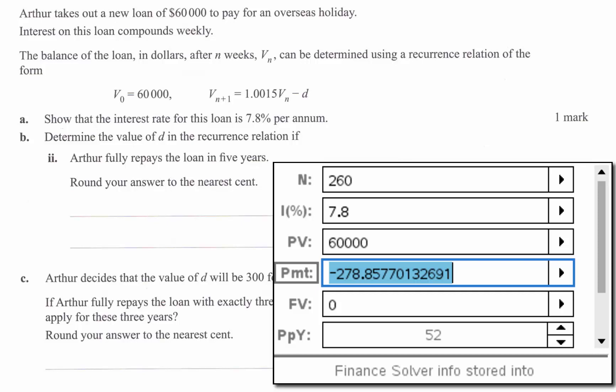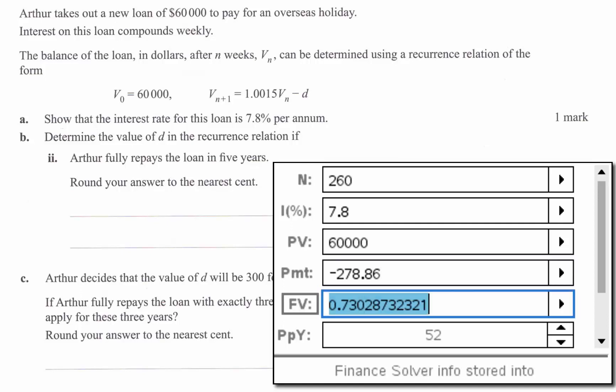Now you can't actually give multiple decimal places after two because it's not possible to pay more than two decimal places worth. So really this needs to be rounded to 278.86 which is the way that number naturally would round anyway. And then you can see future value is 0.73. That means Arthur would actually end up overpaying the loan by 73 cents.